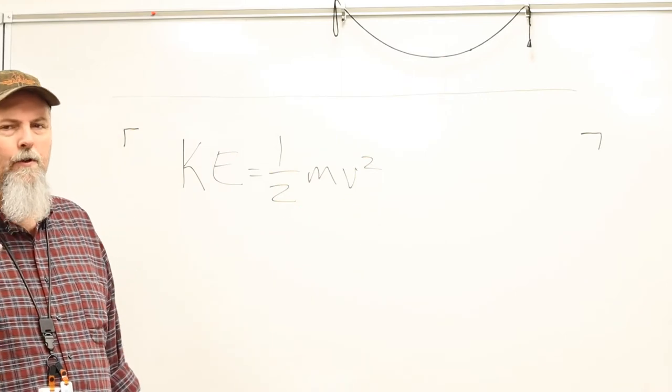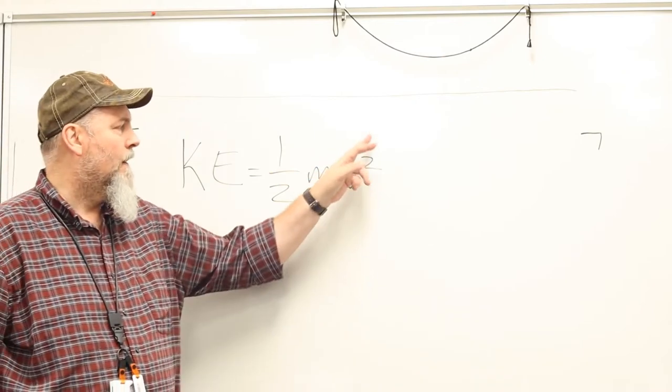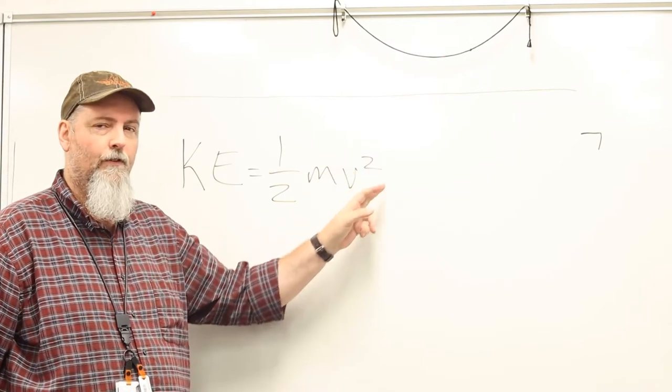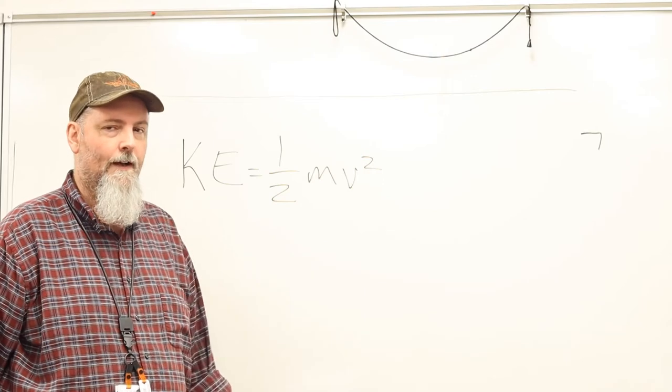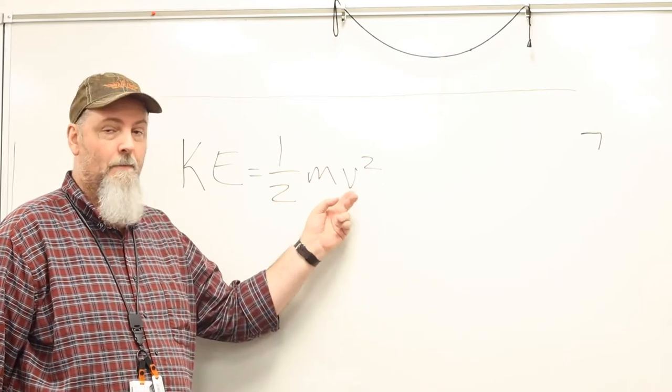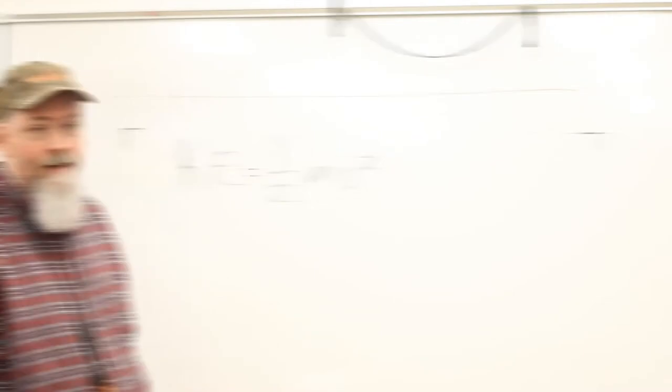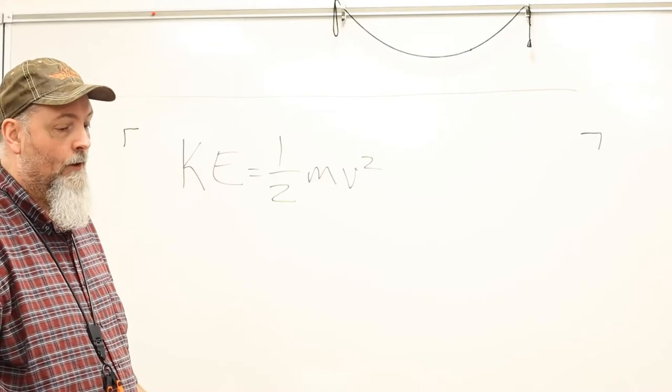Now in the units of properties video I may have left off the square on the velocity when I was talking about that. So just to be clear that is velocity squared. So knowing that's the equation, let's work a problem.